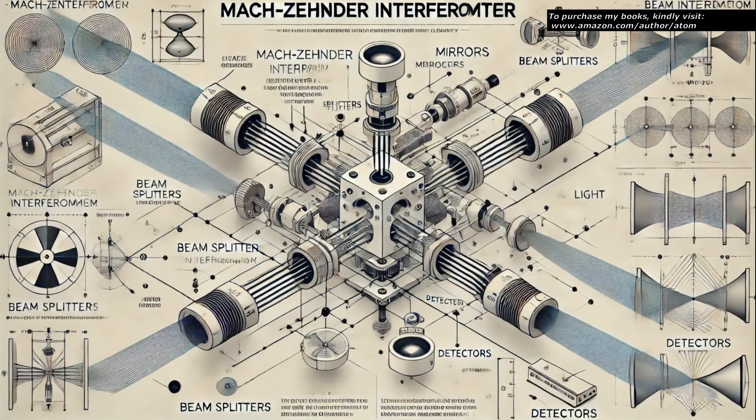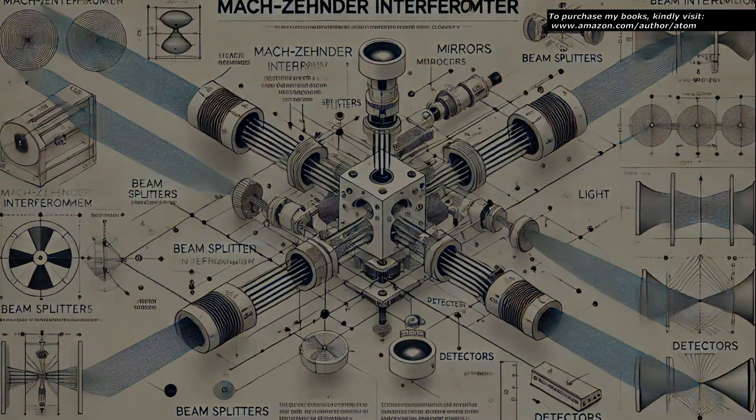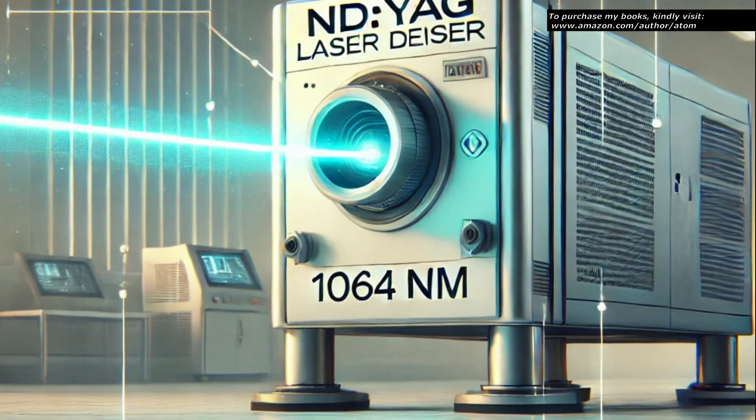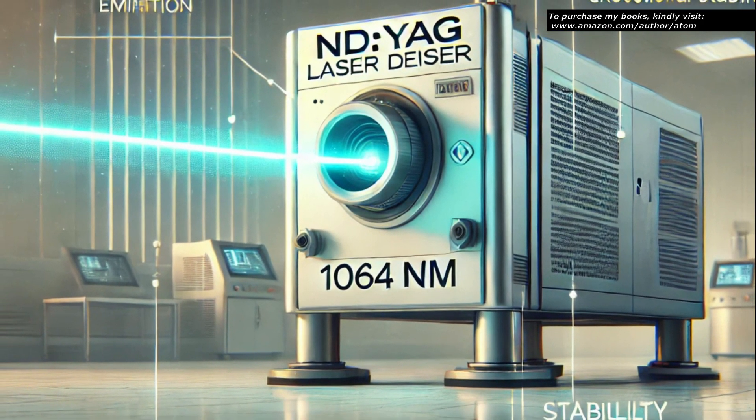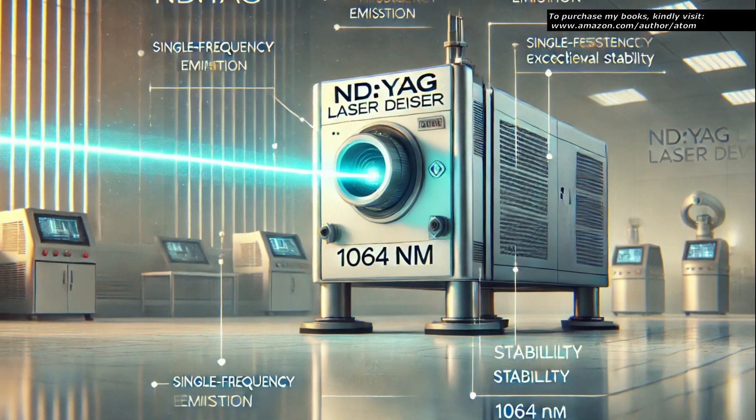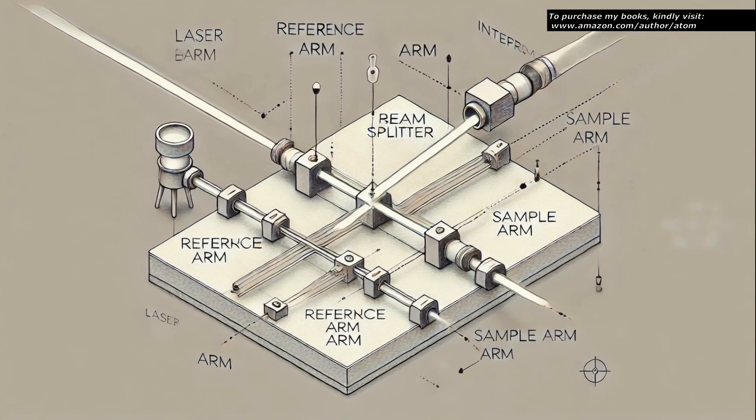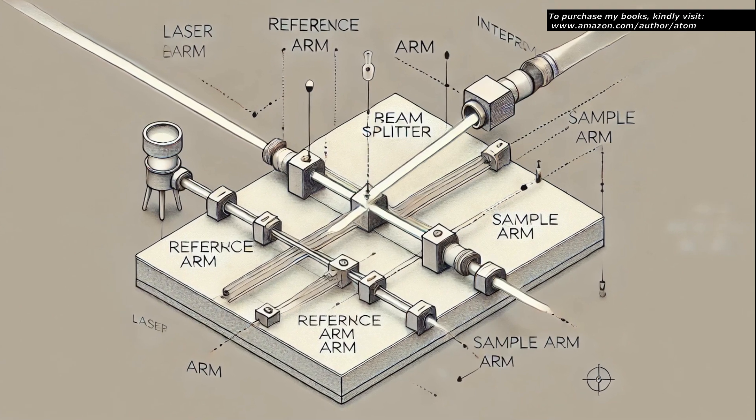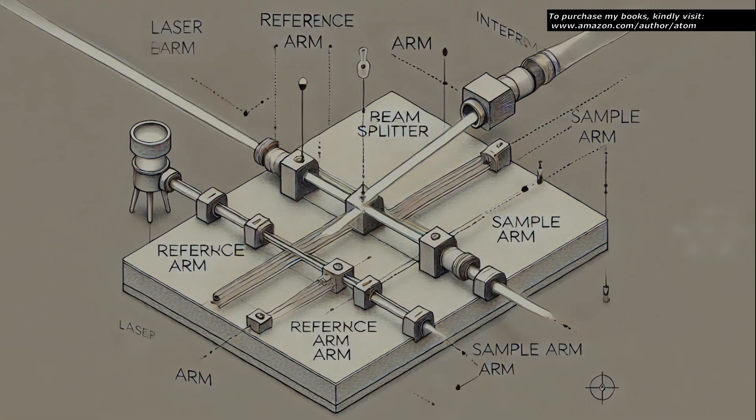The core of the experimental setup is the Mach-Zehnder interferometer. A single-frequency, highly stable laser, such as an Nd:YAG laser operating at 1064 nanometers, serves as the light source. The laser beam is split into two arms: a reference arm and a sample arm.